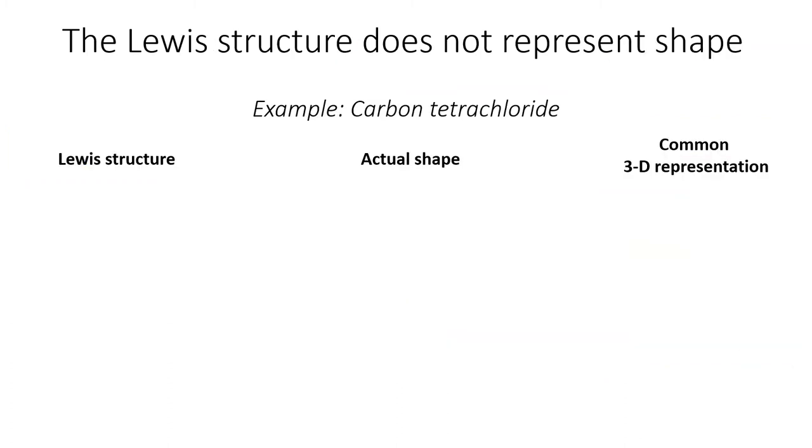The Lewis structure is a great representation of the bonding within a molecule, but unfortunately, it does not represent the molecule's three-dimensional shape. For example, the Lewis structure for carbon tetrachloride is shown here. But its actual 3D shape looks quite a bit different.